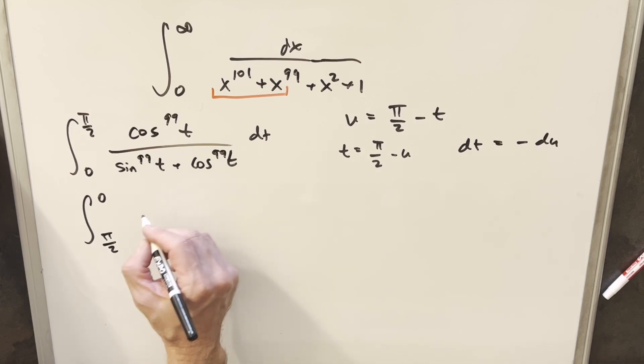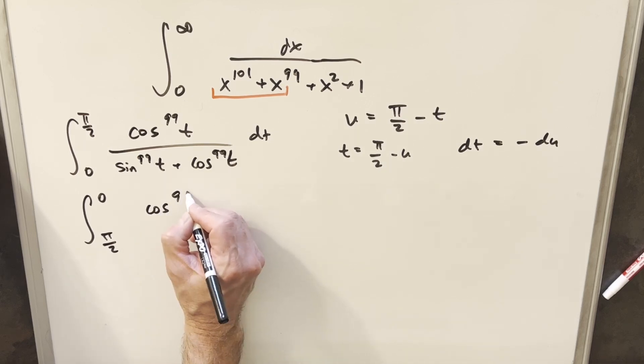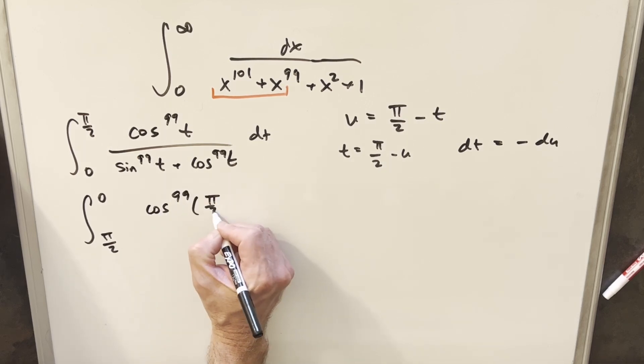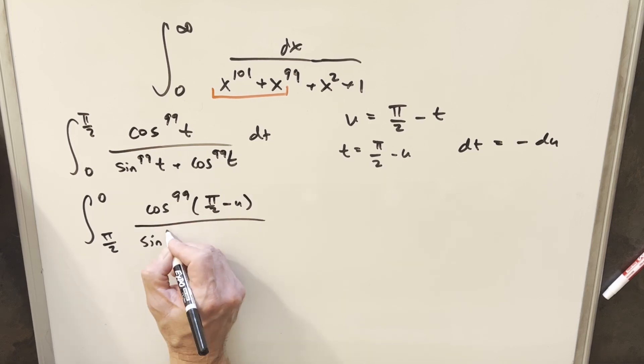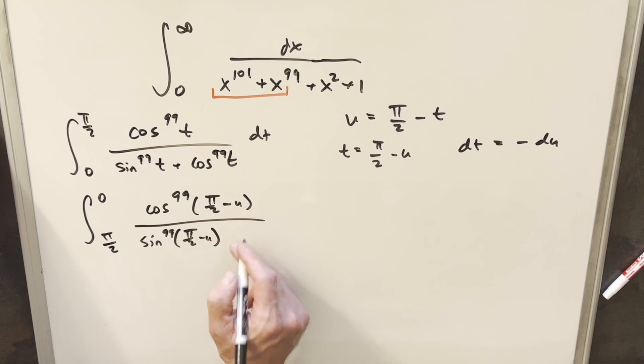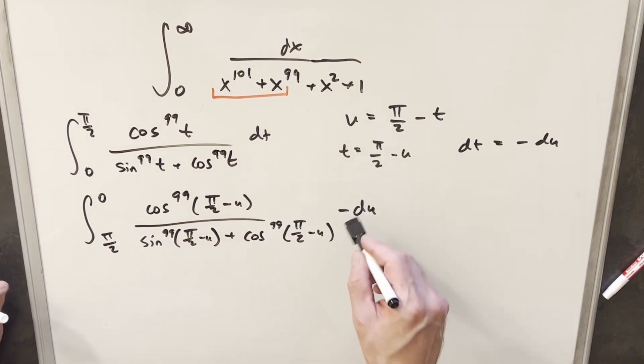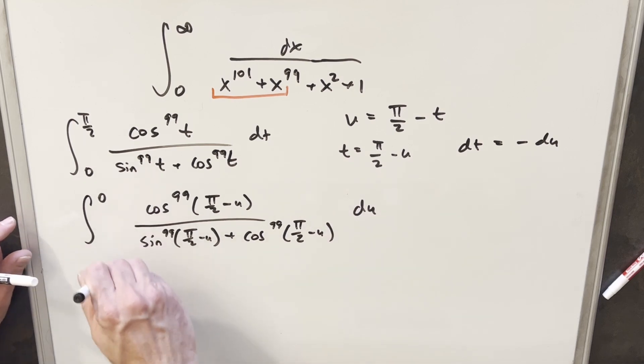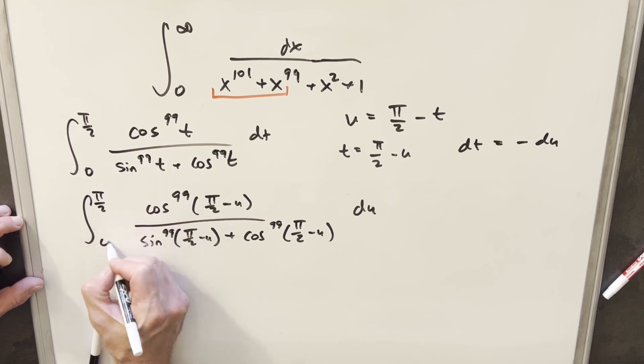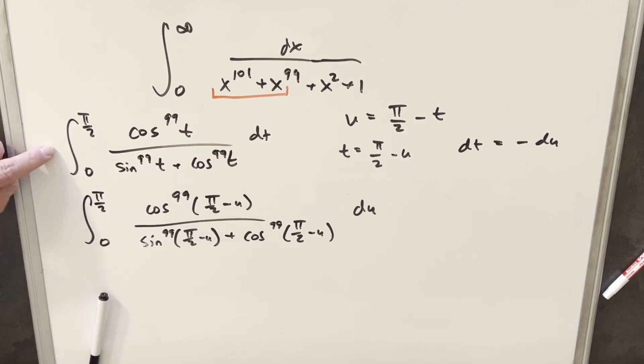Then plugging in our t value, we're going to have cosine 99 pi over 2 minus u. Sine 99 pi over 2 minus u. This cosine here is going to be exactly the same as our numerator. Now, from here, we have this minus sign. I'm just going to take this up front and use it to swap my bounds. So then by doing that, you notice we have the same bounds here and here.